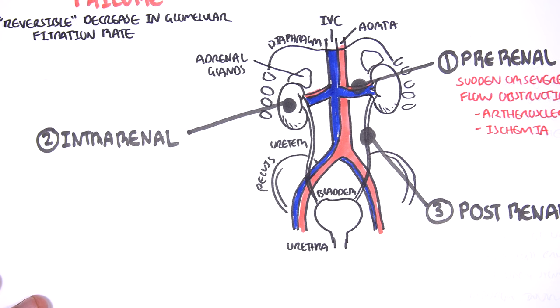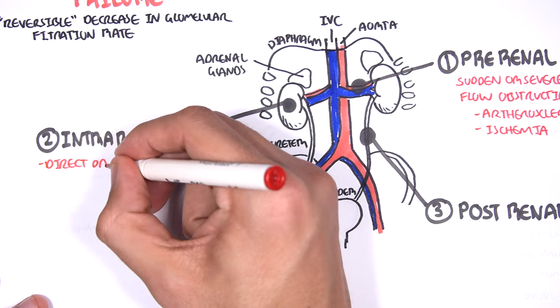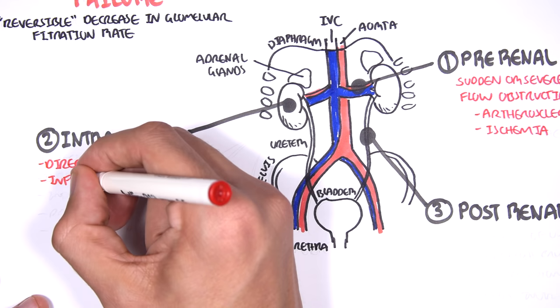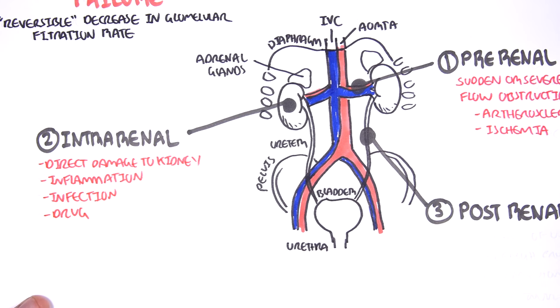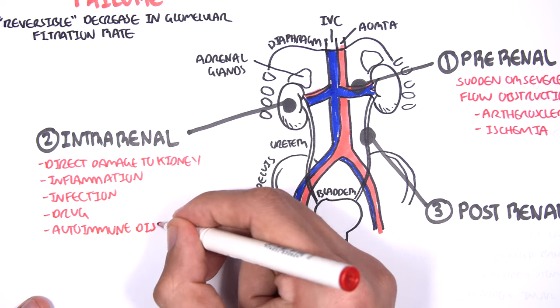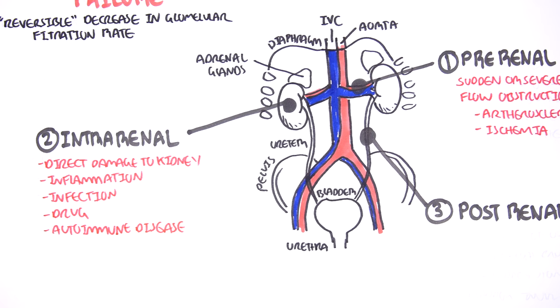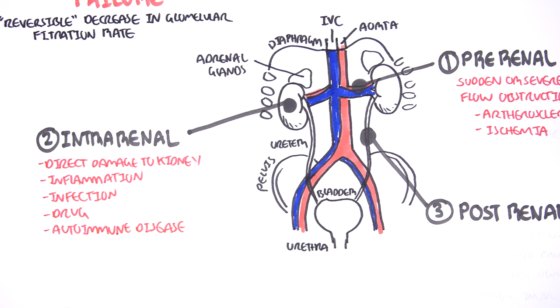And then you have intra-renal cause. Now, intra-renal causes include direct damage to the kidneys itself, inflammation within the kidneys, a form of infection, drugs, as well as autoimmune diseases, such as systemic lupus erythematosus.